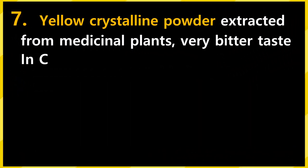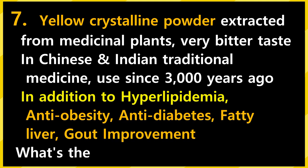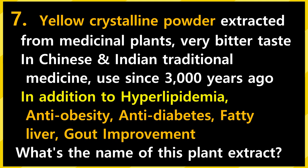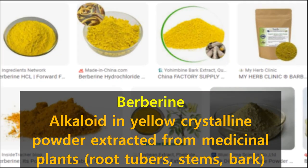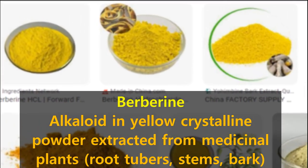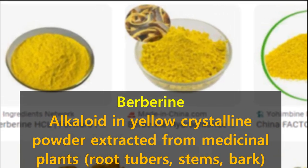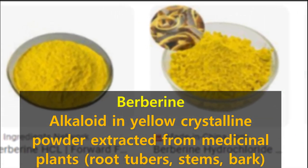Now finally, the 7th plant — it is a yellow crystalline powder extracted from medicinal plants and has a very bitter taste. It is a natural product that has been used for medicinal purposes in traditional Chinese and Indian medicine for about 3,000 years. In addition to treating hyperlipidemia, it improves diabetes, obesity, fatty liver, and gout. What is the name of this plant extract? It is berberine — a crystalline powder extracted from the roots, tubers, stems, and bark of several medicinal plants.